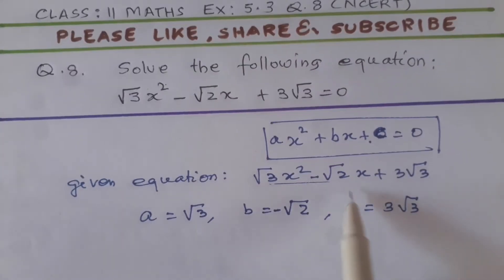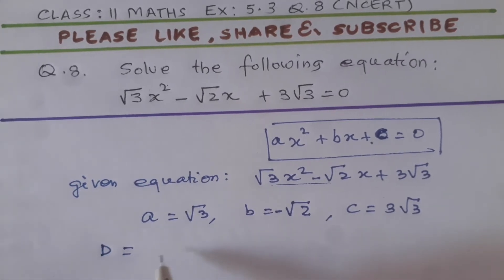And to find the solution of this question, first of all we have to find D, D means discriminant. So D is equal to B squared minus 4 A C. So putting the value of these terms.